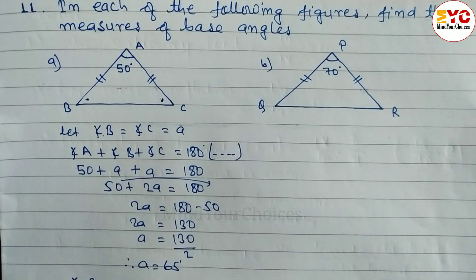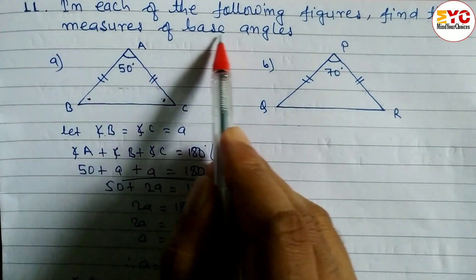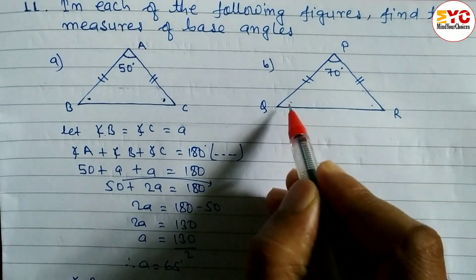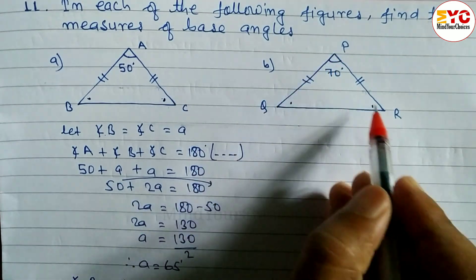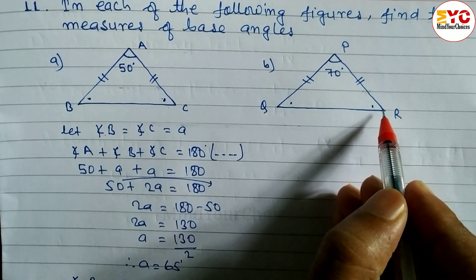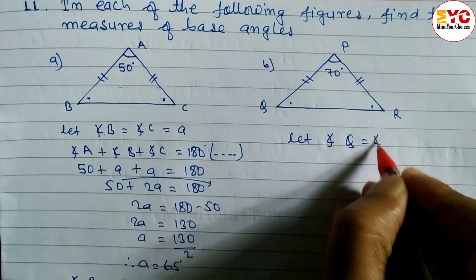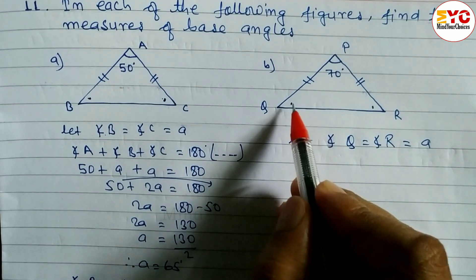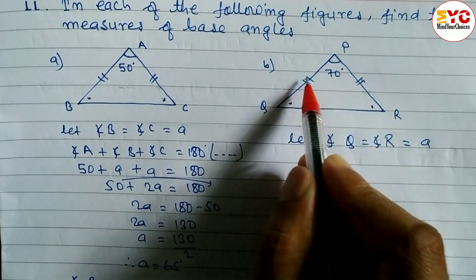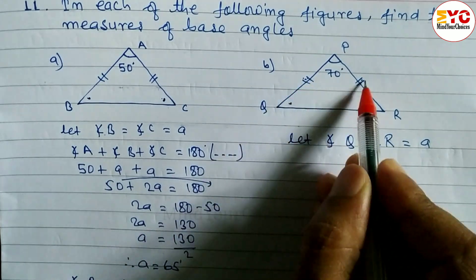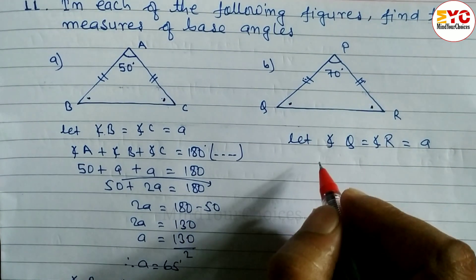Now look at part B. You can see that the vertical angle is 70 degrees and we have to find out the base angles. It means angle Q and angle R we have to find out. These two are equal. Why? Because PQ and PR are equal, being an isosceles triangle. So we can let angle Q is equal to angle R is equal to A. When two sides are equal, base angles are equal.